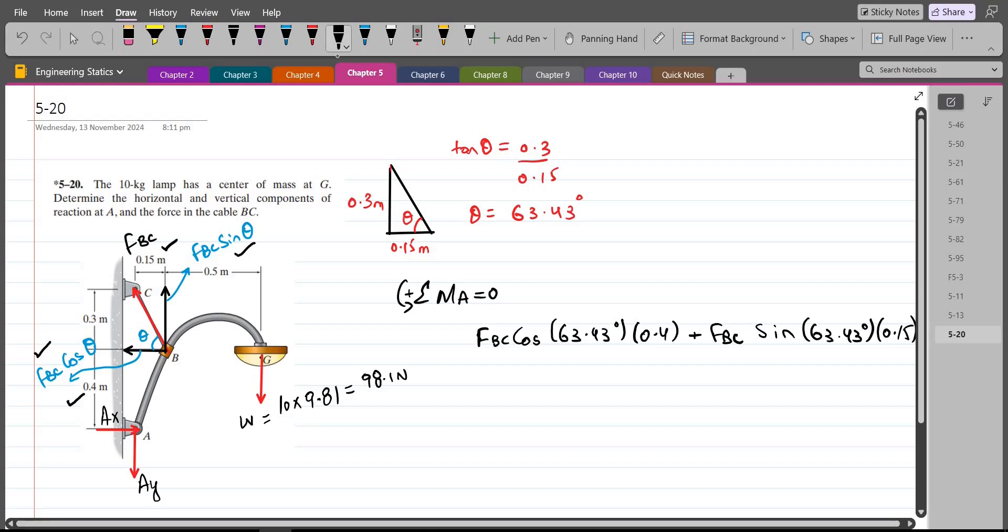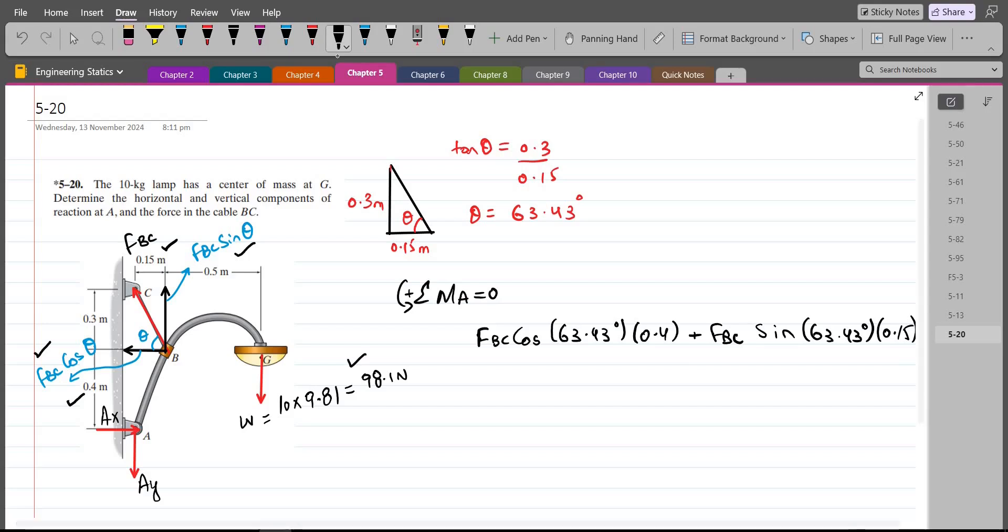Also we have a weight which is trying to rotate the lamp in clockwise direction about point A. So the moment produced by this weight force will be taken as negative. And the moment arm is this complete distance.